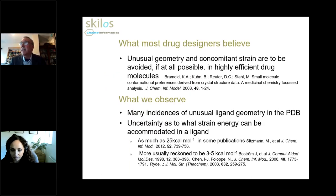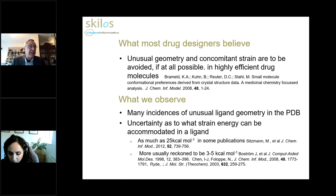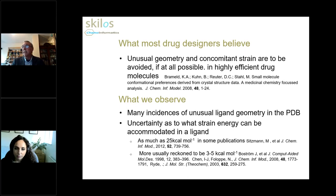I state at the top of this slide what most drug designers believe: when we're designing drugs, unusual geometry and the strain implicit in that should be avoided at all possible in the designs we put together. If I was to pick one reference to highlight this, it would be the classic paper from the Roche group in 2008, which showed drug designers how we can use the conformational preferences from the chemostructural database to help design good geometry into our molecules.